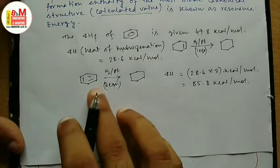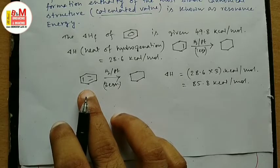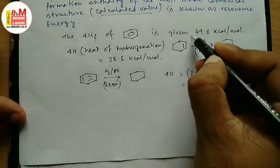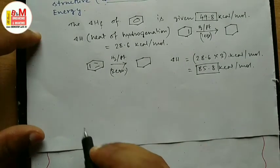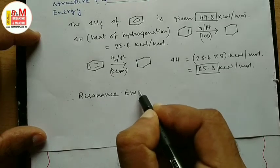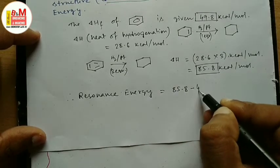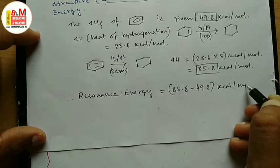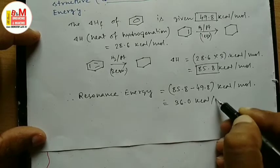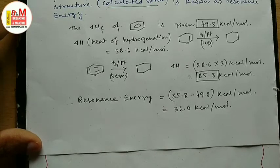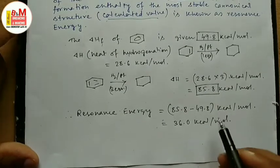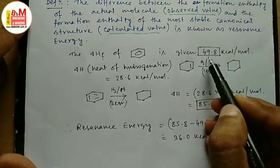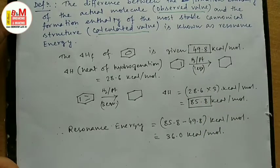For benzene, both canonical structures are identical, so there is no question of the most stable canonical structure — both are equally stable. The difference between the calculated value (85.8 kcal/mol) and the observed value gives the resonance energy. The resonance energy is 85.8 minus 49.8 kilocalorie per mole, which equals 36.0 kilocalorie per mole. Note that the formation enthalpy values are actually negative, but here we have taken the mod values for simplicity.